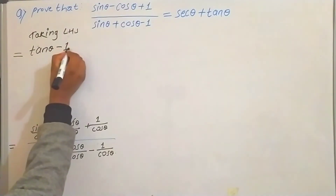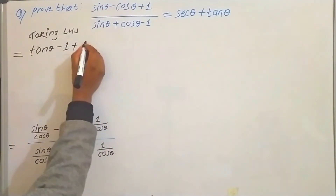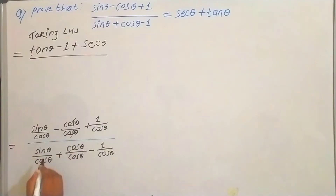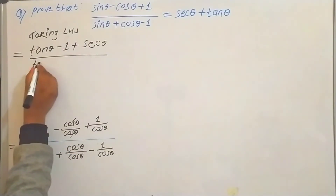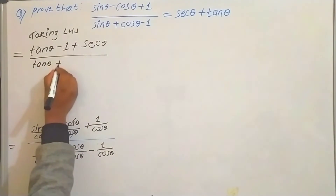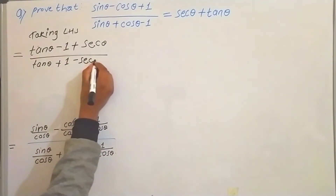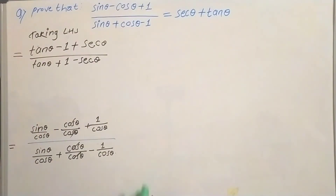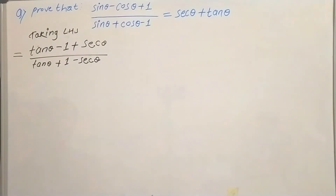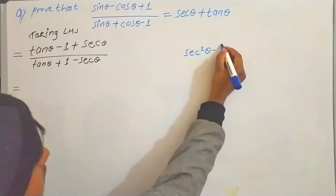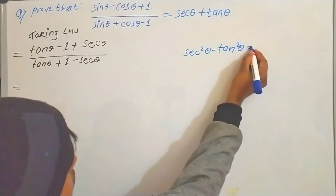Sin θ upon cos θ equals tan θ. Cos θ over cos θ will cancel to give 1. And 1 upon cos θ equals sec θ. Don't write zero here — it is in fraction form, it will not be zero. So the expression becomes tan θ + 1 − sec θ in the denominator, and tan θ − 1 + sec θ in the numerator.